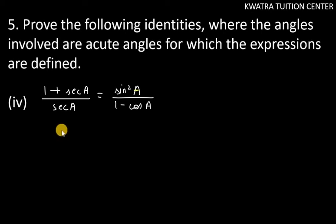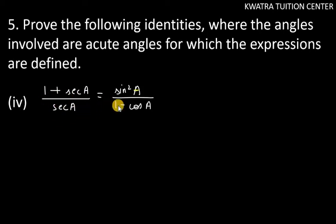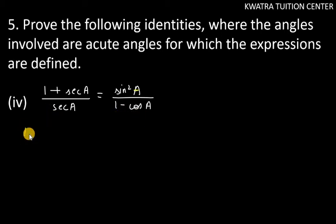Hello everyone, let's start with question number 5. I am starting with the 4th part. We have to prove: 1 plus sec(a) over sec(a) equals sin square a over 1 minus cos a. We have to solve the left hand side first.